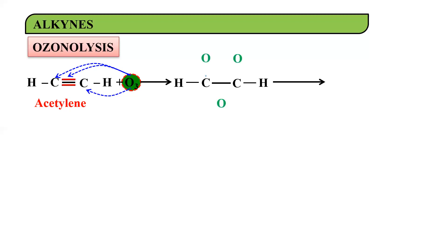The small difference is that in alkenes the entire double bond is broken, but in alkynes two bonds are broken and one bond remains intact. That's the key difference between the ozonoid formed by an alkyne and that formed by an alkene. If a carbon-to-carbon single bond is still intact, then it is an ozonoid formed by an alkyne.